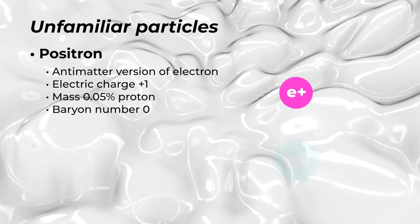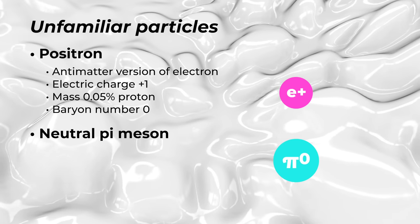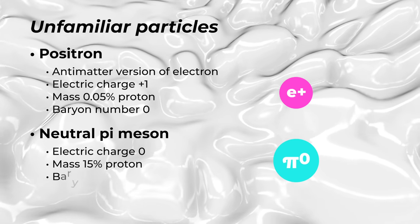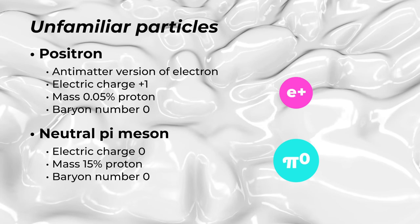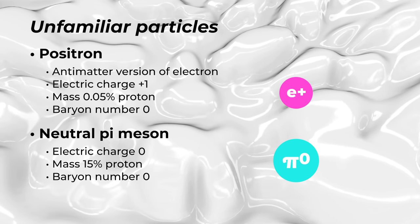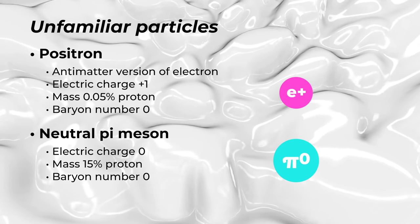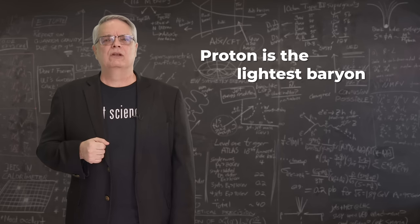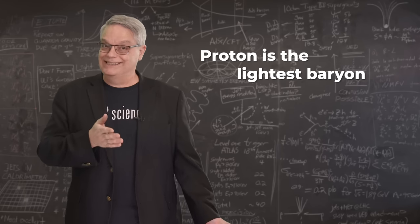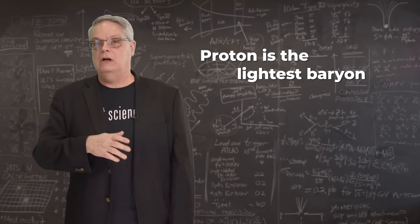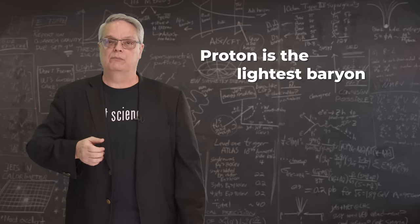The second is called a pi meson. It is also pretty light, with a mass of about 15 percent that of a proton. And it's not a baryon either, so it has a baryon number of zero. Finally, there's one more fact that's important, which is that the proton is the lightest baryon. All other baryons are heavier than the proton.